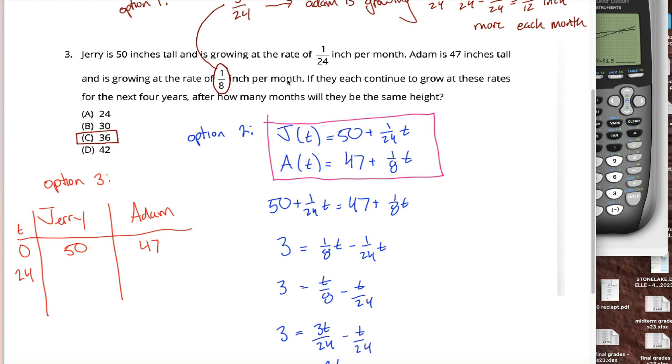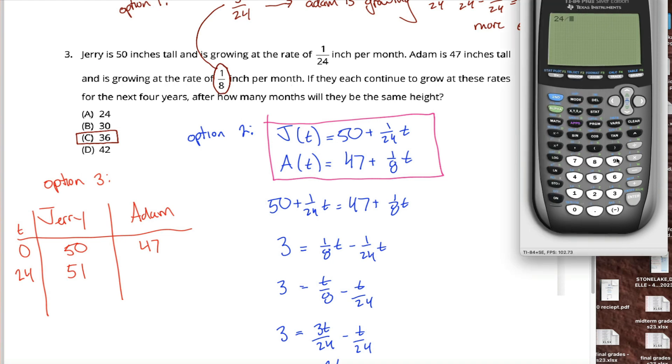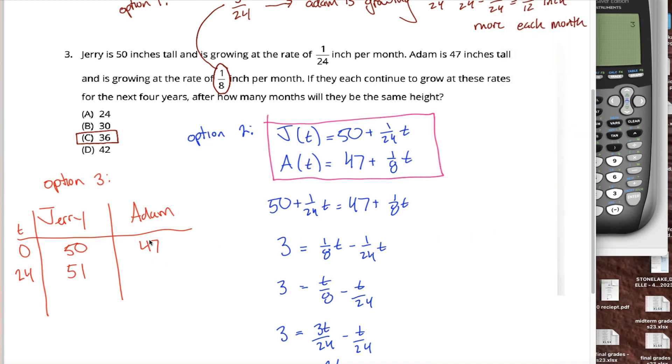Jerry started out at 50 inches tall and he grows a 24th of an inch every month. So in 24 months, he'll grow 24 of these 1/24th of an inch. In other words, he'll grow one full inch. He'll now be 51 inches tall. What about Adam? He started out at 47 inches tall and he's growing at a rate of 1/8th inch per month. So in 24 months, he'll grow 24/8ths. 24/8ths is equal to three. If you don't like dividing numbers, pull out your calculator. He'll be the original 47 inches plus three more inches, he'll be 50 inches tall. The answer is not 24 because in 24 months, they do not have the same height. One of them is 51 inches tall. The other is 50 inches tall. Oh, that's too bad.